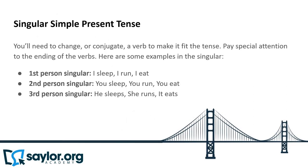Singular simple present tense. You'll need to change, or conjugate, a verb to make it fit the tense. Pay special attention to the ending of the verbs. Here are some examples. First person singular: I sleep, I run, I eat. Second person singular: you sleep, you run, you eat. Third person singular: he sleeps, she runs, it eats.